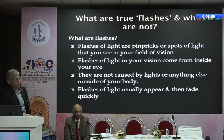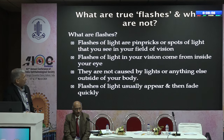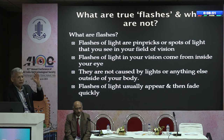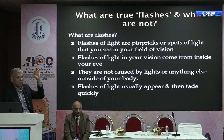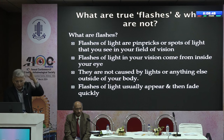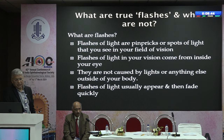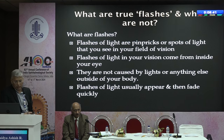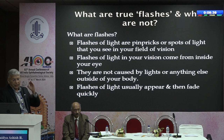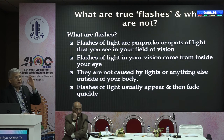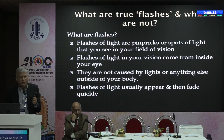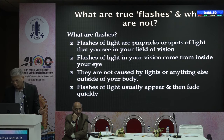The question arises: what are true flashes? Flashes of light are pinprick spots of light you see in your field of vision that suddenly appear, blink, and go off. They come from inside the eye — not caused by outside lights — and they usually appear and then fade away quickly, within a matter of about 10 to 15 seconds.